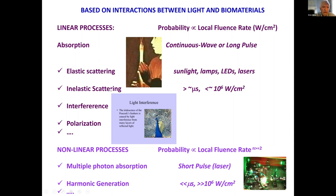In addition to these linear processes, there are increasingly emerging nonlinear processes. This is a process in which the probability is proportional to some power of the local fluence. If two photons are involved, it's square; if three photons are involved, it's cube. This is achieved with very short pulse lasers, much less than a microsecond, with instantaneous power densities greater than megawatts per square centimeter.